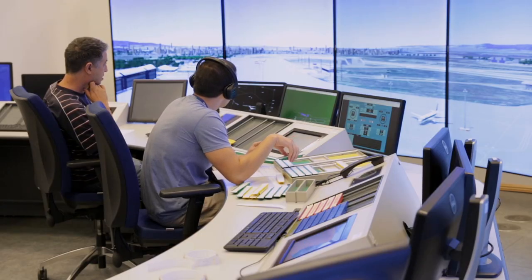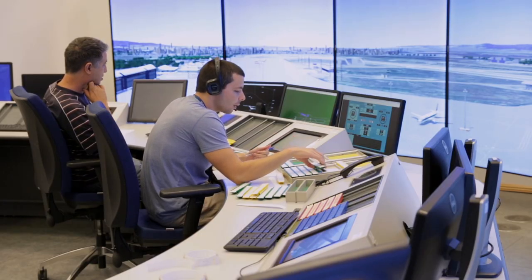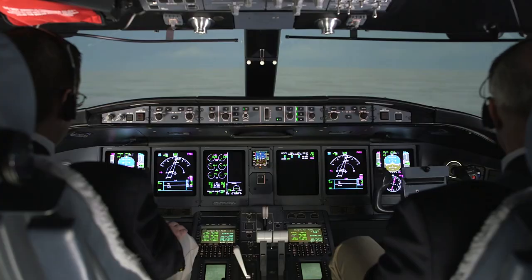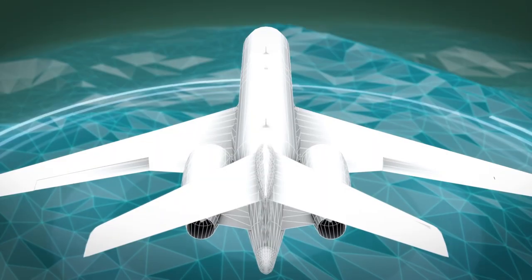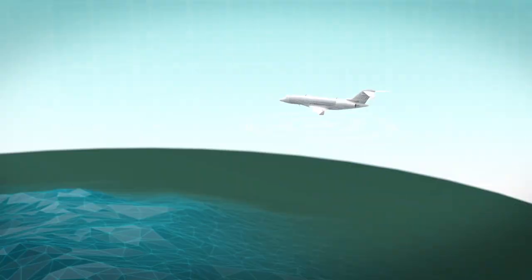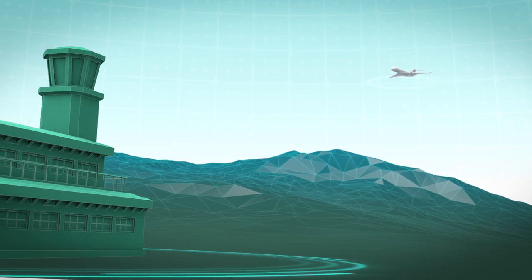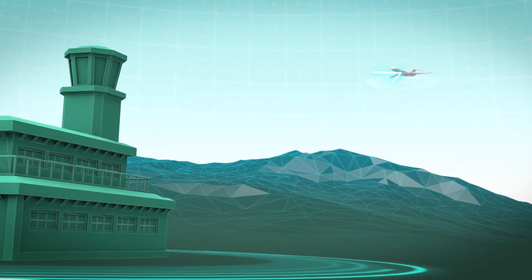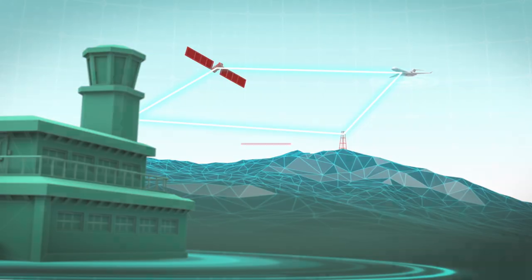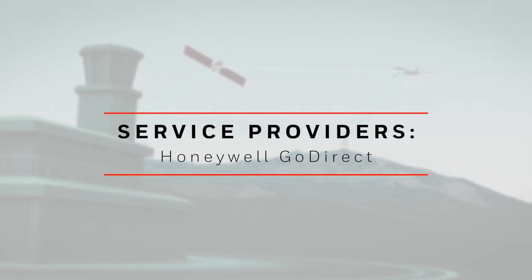Data link services improve communications and surveillance while enabling reduced separation and providing improved weather deviation management. A data link system contains the data link equipment on the aircraft, the air traffic service station on the ground, and a communications network. Sometimes data link systems can include one or more service providers.